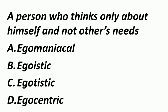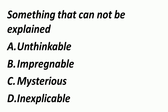A person who thinks only about himself and not others' needs — एक ऐसा व्यक्ति जो सिर्फ अपने बारे में सोचता हो. ऐसे व्यक्ति को हम कहते हैं Egocentric. Egomaniacal मतलब psychological abnormality — जो सिर्फ अपनी needs के बारे में सोचता हो. Egoistic — the quality of believing in self-advancement. Egotistic मतलब self-centered person — जो सिर्फ अपनी ही desires में गिरा रहता है.